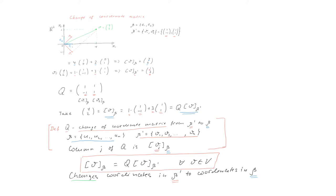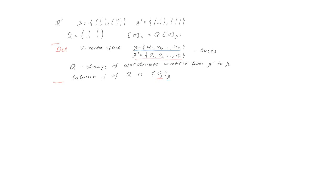These questions we are going to answer by connecting this matrix Q to a linear transformation. Here I summarized what we have so far: the example in R2 with the two bases, the matrix Q we constructed, and the relation that holds. We defined the change of coordinate matrix, where column j is the vector vj from the basis beta prime written in the coordinates of the basis beta. Recall that any matrix can be seen as the matrix of some linear transformation, and the same applies to matrix Q.